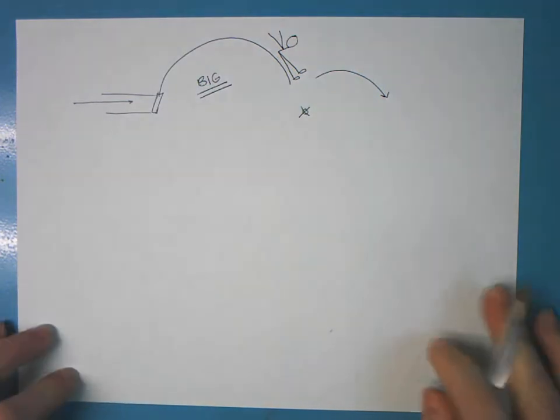Anytime an athlete stumbles forward at the end of their jump, it's an indication that something went wrong in terms of takeoff, flight, or over-rotation at the ending. So this is one big thing that I wanted to show them.